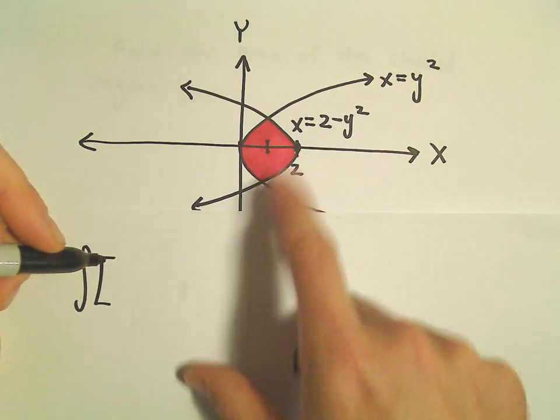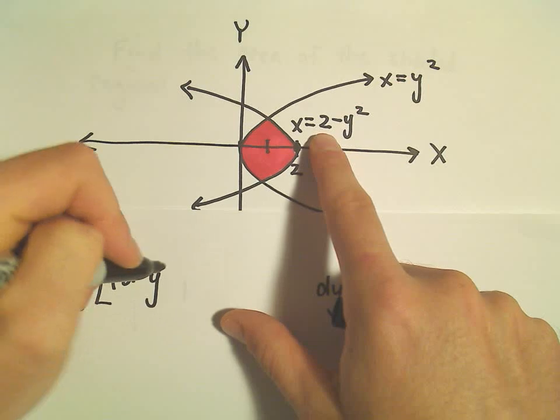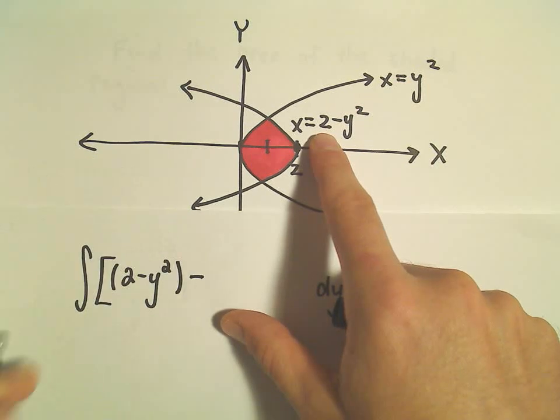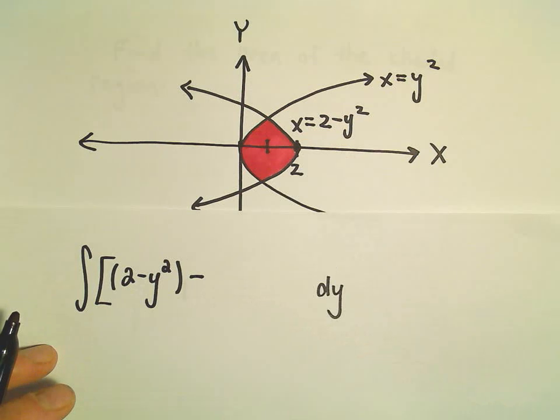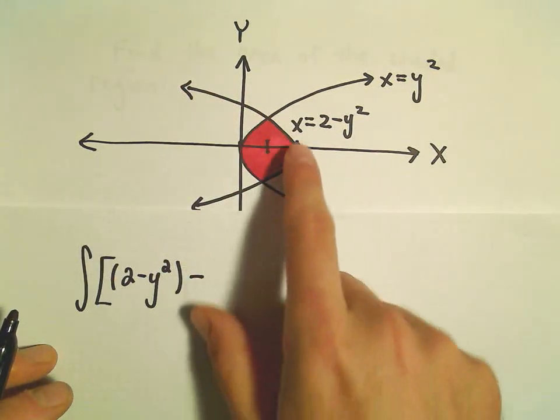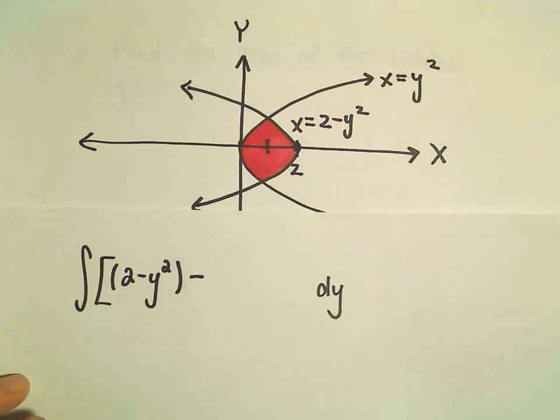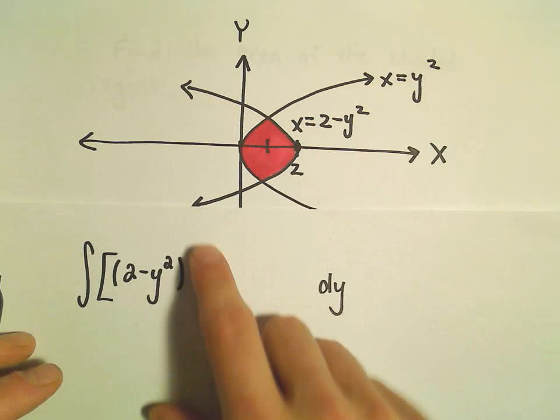So, we'll take the function, the rightmost function, 2 minus y squared. We'll subtract away the leftmost, I shouldn't say function, I was trying not to say that. These are not functions, right? I guess we could say they are functions of y, but definitely not functions of x. Okay, so I'm just going to refer to them as curves.